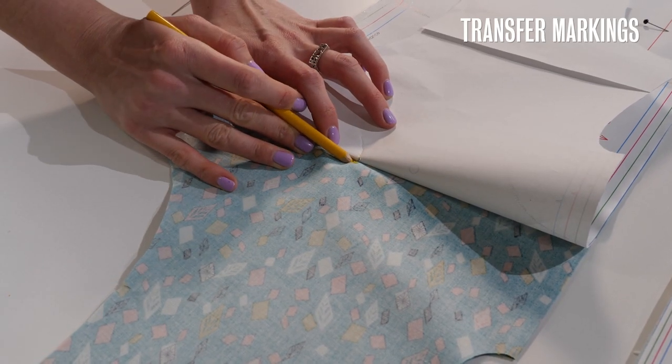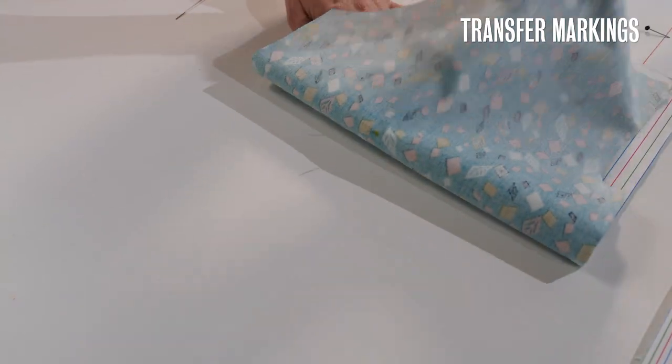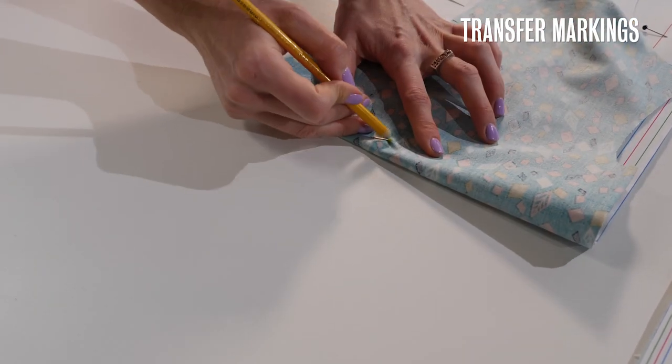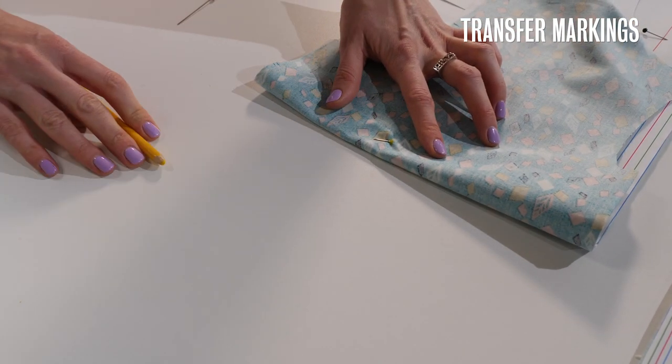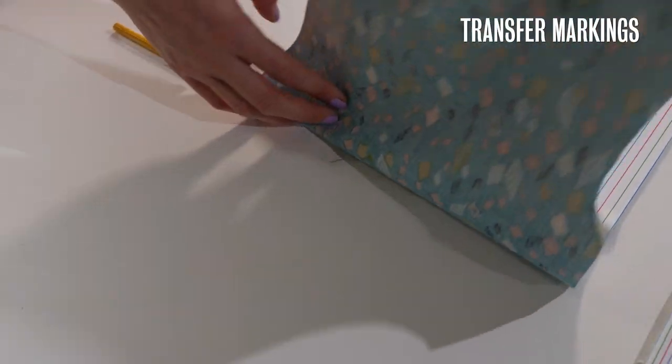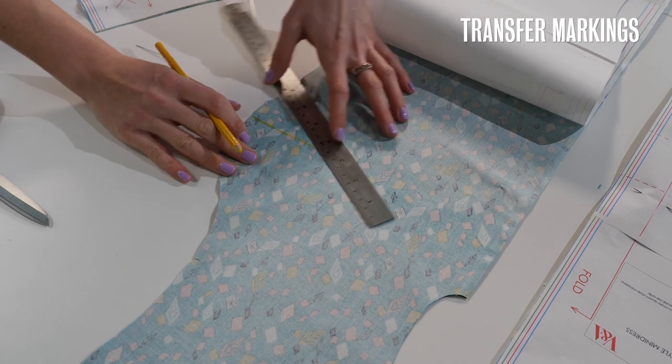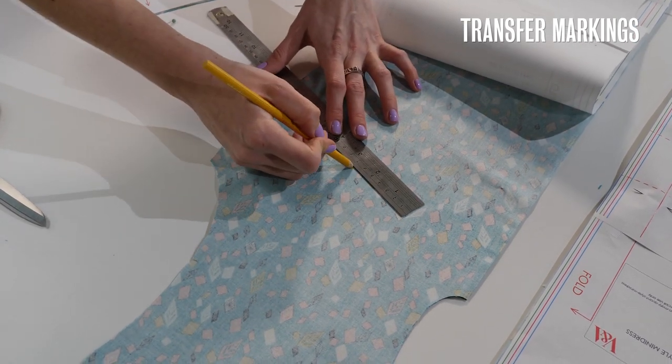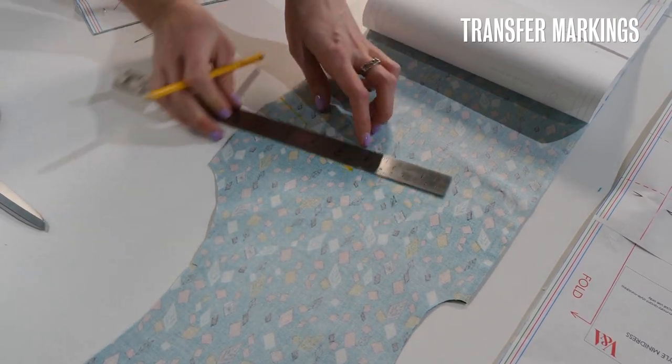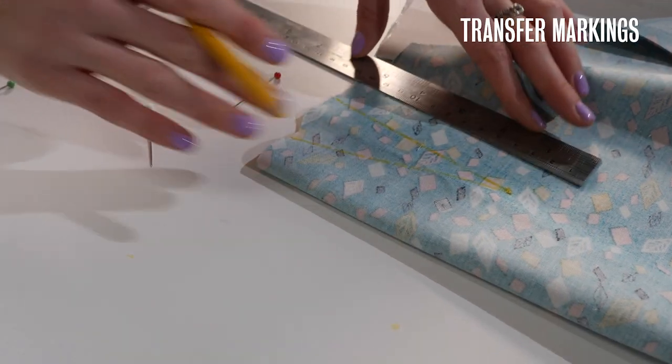And then I can pull the paper pattern back and mark where the end of the dart should sit and then unfold again and mark on the other side and that will give me where my two darts should be. I can use a ruler to mark out where my dart should be and then exactly the same on the other side.